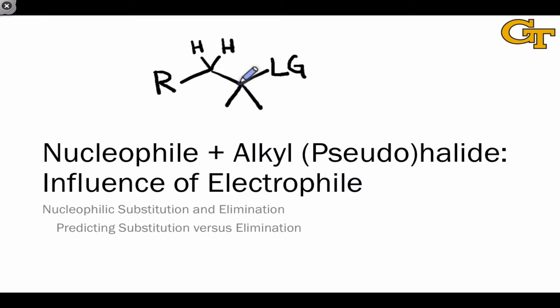In general, when the carbon has a large number of alkyl substituents, substitution tends to be disfavored, since it's difficult for the nucleophile to find its way into the electrophilic carbon. And when we say disfavored, we mean so in a kinetic sense.